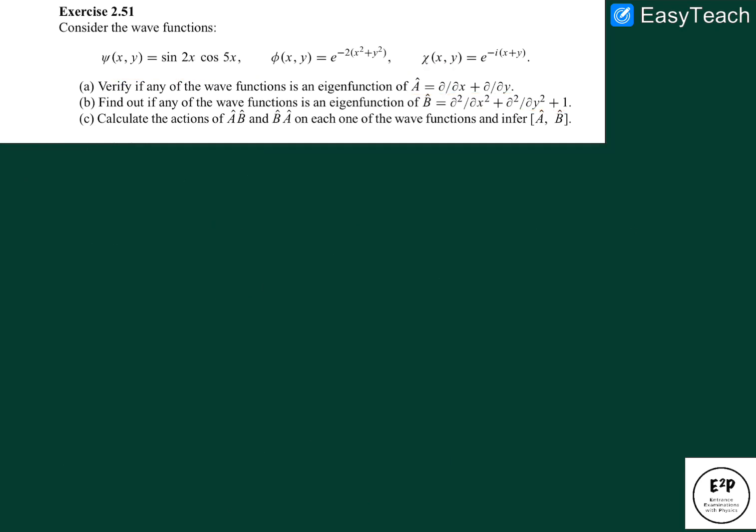Similarly we do the same process on phi. A cap phi, we get d by dx plus d by dy into e to the minus 2 x squared plus y squared. We get minus 4x minus 4y e to the minus 2 x squared plus y squared.